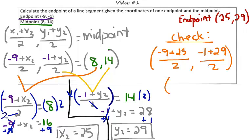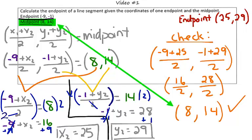We're going to go ahead and simplify. So negative 9 plus 25 is 16 divided by 2. And negative 1 plus 29 is 28 divided by 2. Simplifying both of these, we get 8, 14. So our ordered pair is 8, 14, which checks what we originally wanted to find. Nice work!